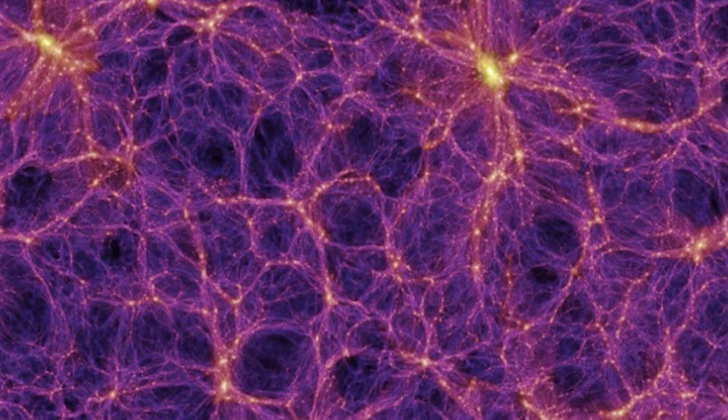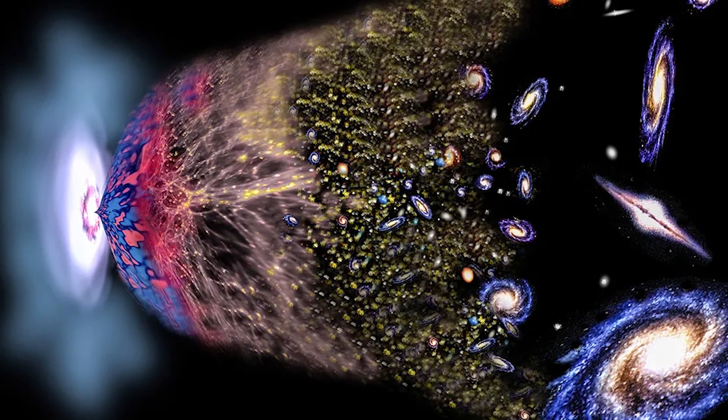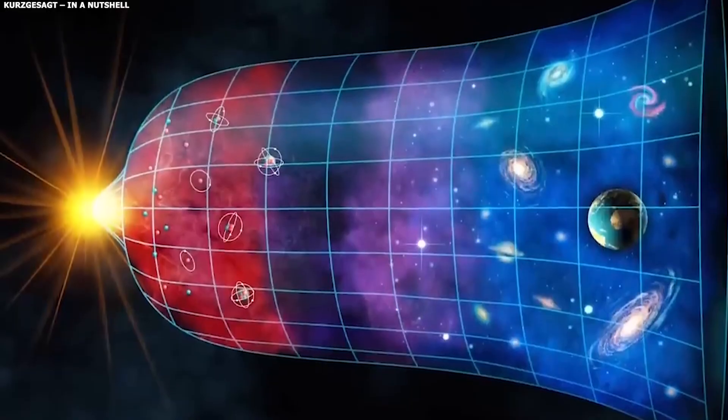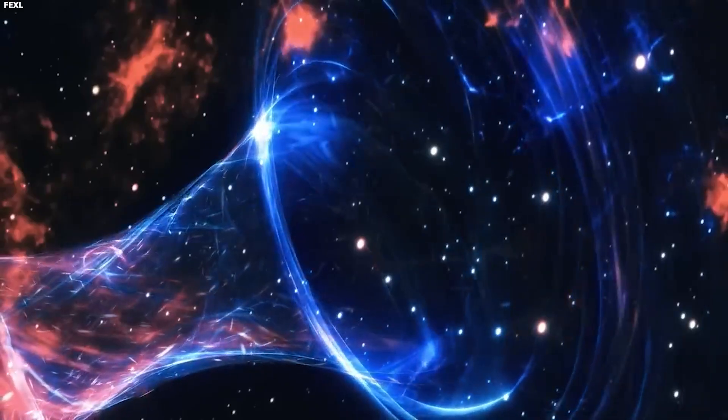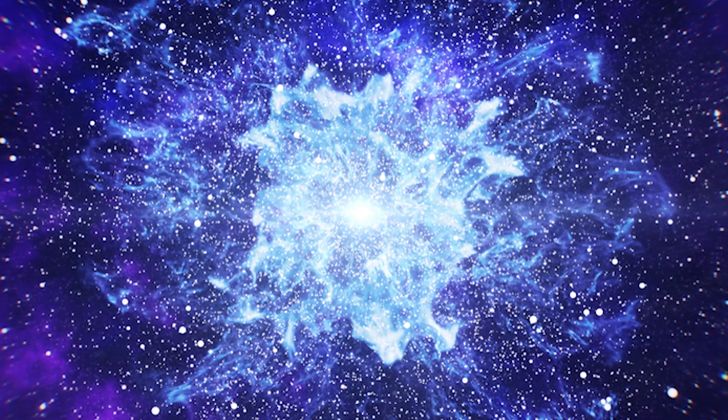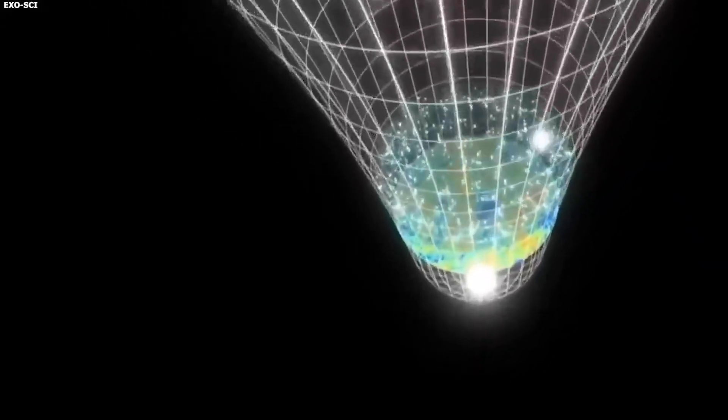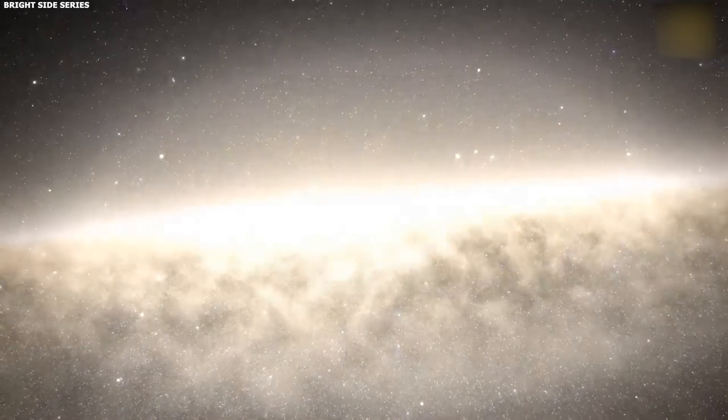And these aren't the only cracks. There's the lithium problem. The Big Bang should have created about three times more lithium than we actually see in old stars. Nobody knows where it went. We've been looking for decades. Dark matter isn't distributed the way the model predicts either. It should pile up sharply at the centers of galaxies, creating dense cores, but instead we find gentle hills. The distribution is all wrong.